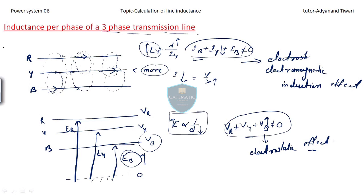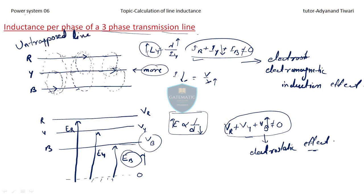These are untransposed lines. Due to this imbalance, we cannot calculate the exact inductance for a three-phase untransposed line. Therefore, there is no formula for the calculation of inductance for a three-phase untransposed line. Next, we will see how to calculate inductance for a transposed line.